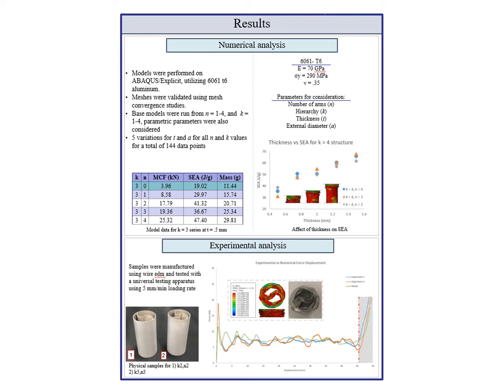The models are run in Abacus Explicit using a 6061 aluminum material property shown at the top right. The models were optimized to obtain the best performance and most accurate results utilizing mesh convergence studies.